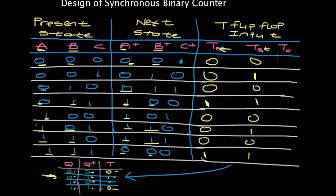And now we go to the T flip-flop input for C. Since C alternates between 0 and 1 every row: 0,1 gives 1; 1,0 gives 1; 0,1 gives 1; 1,0 gives 1 — and this pattern repeats for all eight rows. So every entry in the TC column is 1.